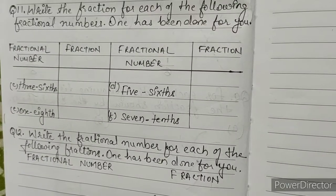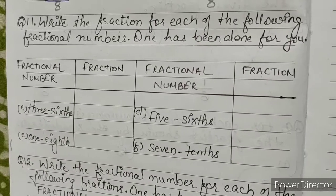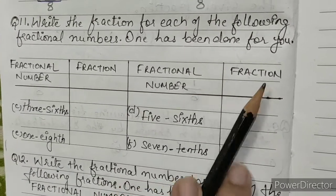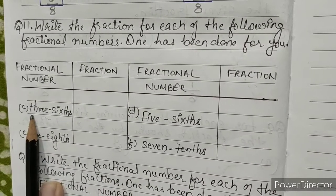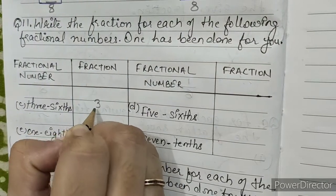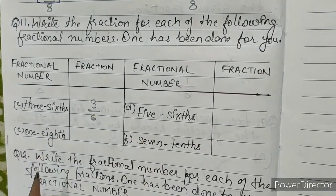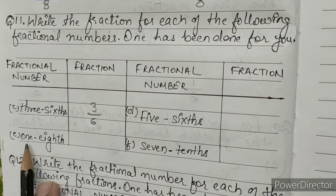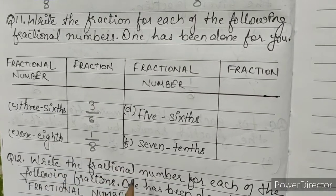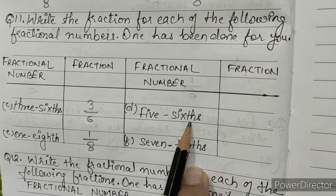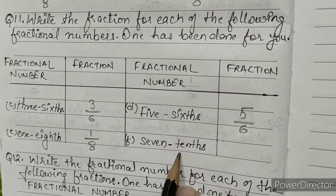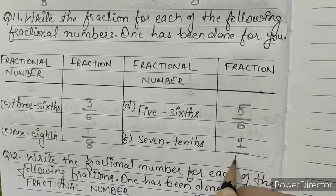Question number 11: write the fraction for each of the following fractional numbers. C: 3 sixths — we have to write in fraction: 3 sixths means 3 by 6. E: 1 eighth means 1 by 8. F: 5 sixths means 5 by 6. G: 7 tenths means 7 by 10.